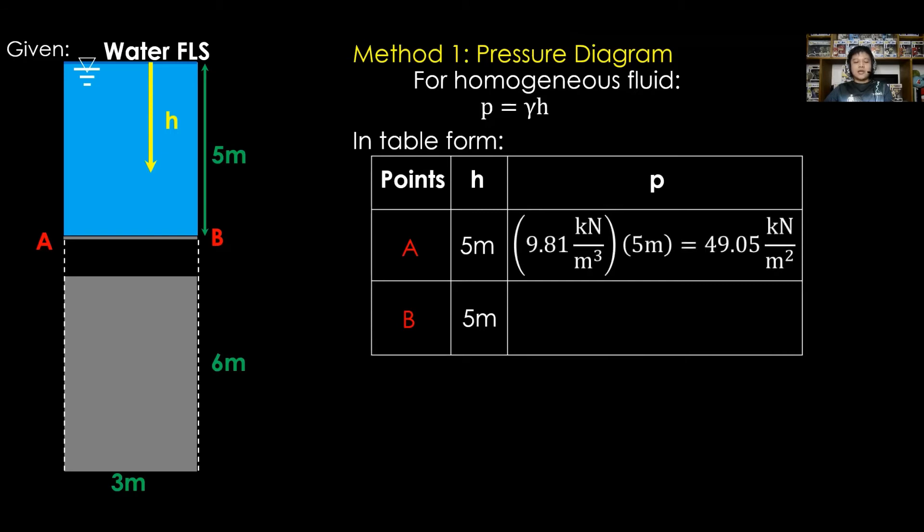Therefore, for P at A, it is equal to the gamma of water, that is 9.81 kilonewtons per cubic meter, multiplied to the identified H that is 5 meters. Thus P at A is 49.05. Since we have the same fluid, same H at B, same P, 49.05. Assign the pressure values at A and B, then draw the pressure diagram.